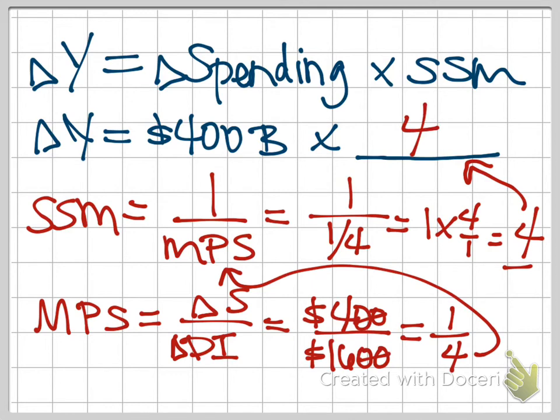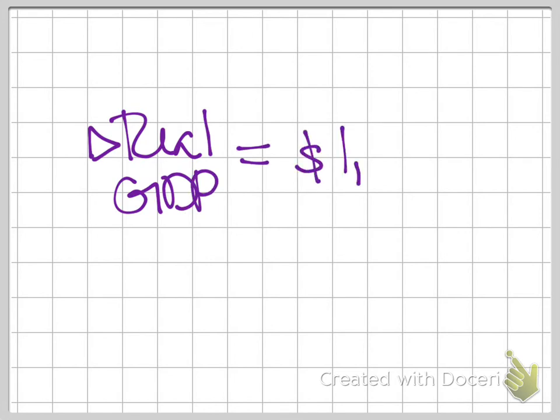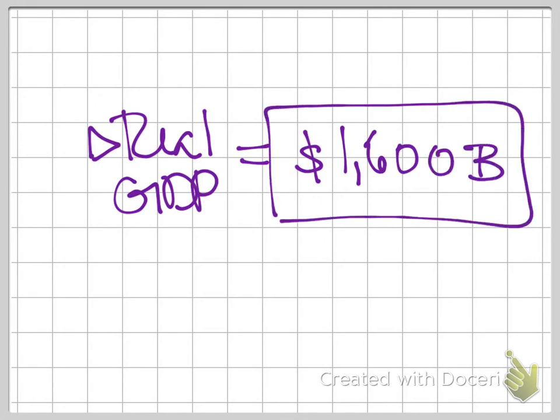And so if government spending increases by $400 billion and my multiplier is four, then my change in real GDP demanded is going to be $400 billion times four. I'm just going to write it out at $1,600 billion. And so that is our final answer.